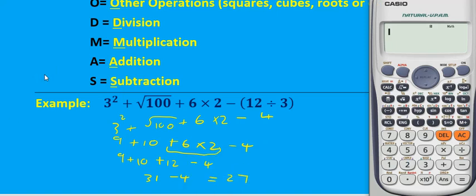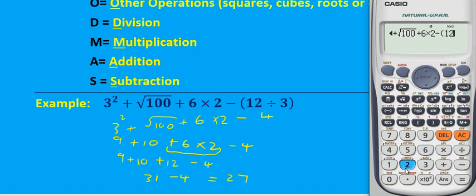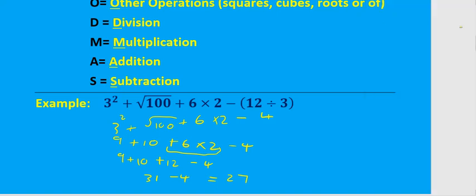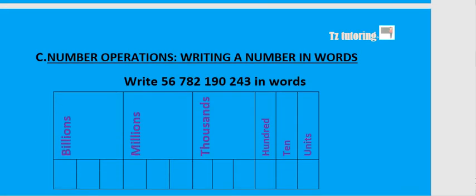If we put in the original expression — 3 squared plus the square root of 100, plus 6 times 2, minus 12 divided by 3 — the calculator gives us 27. So the calculator uses BODMAS, and if you're allowed to use a calculator you can punch in the expression as it is.